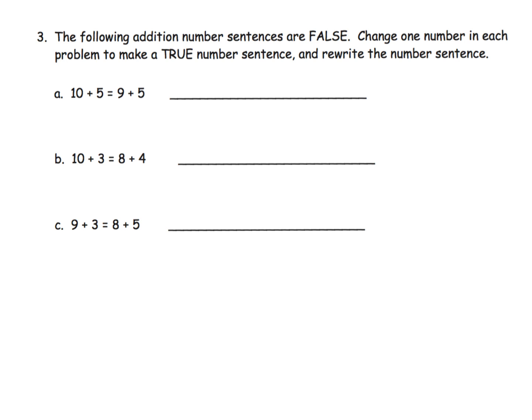And now here, it's more of the same. We're given two expressions around an equal sign. So we have this equation. And we're supposed to figure out, they're all false. And we're supposed to figure out which number should we change to make it a true sentence.